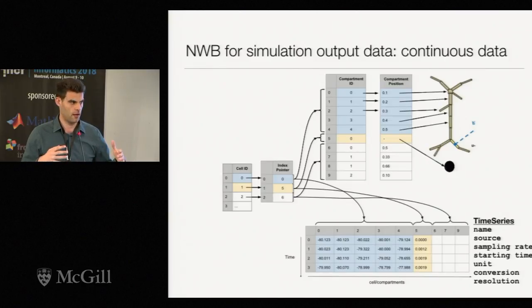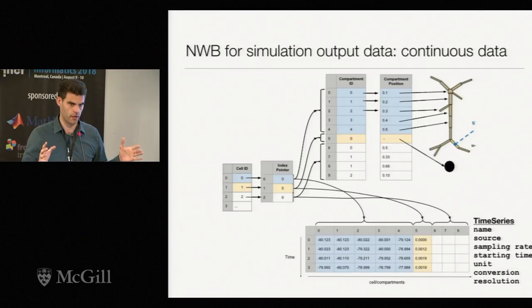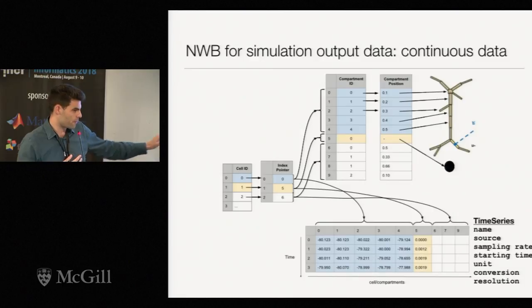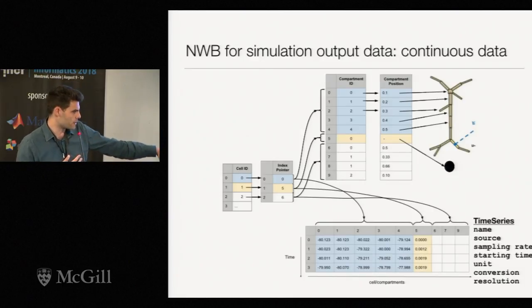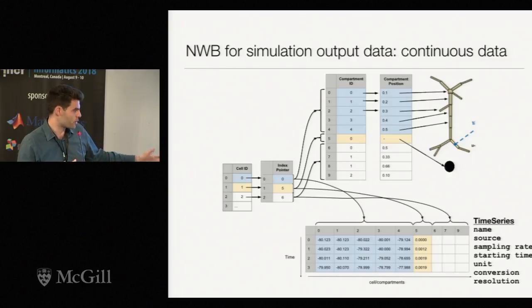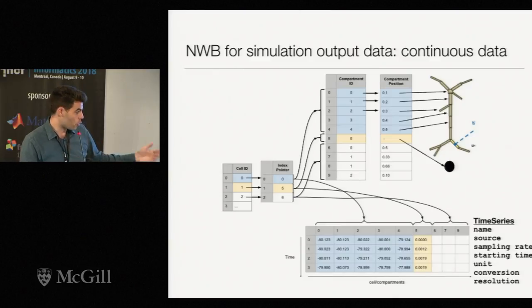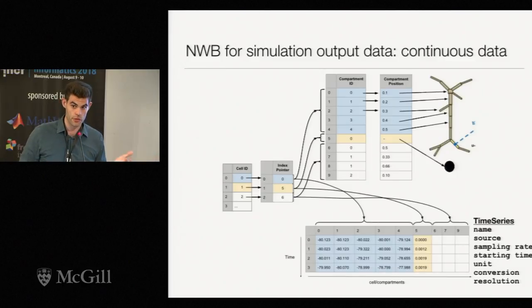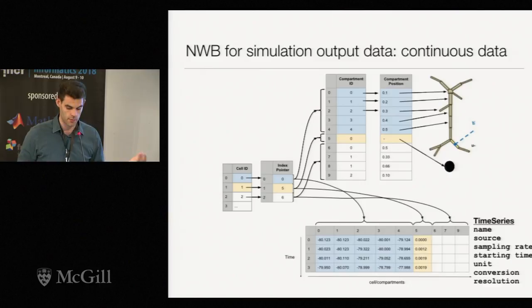Once we have those compartments labeled, we use a standard matrix time series — time by the number of cells times the average number of compartments. The way this integrates into NeuroData Without Borders is object-oriented: this time series object inherits from a time series measurement type, meaning all attributes are requirements. You need to store the name, source, sampling rate, starting time, unit, conversion, and resolution. Those are the essential metadata needed to analyze or understand a time series.